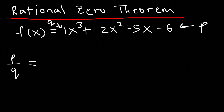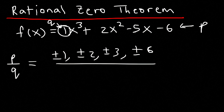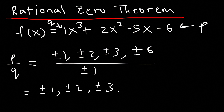Factors of p, or factors of negative 6, include plus or minus 1, plus or minus 2, plus or minus 3, and plus or minus 6. Factors of the leading coefficient 1 is just plus or minus 1, and any number divided by 1 is itself. So the possible rational zeros are ±1, ±2, ±3, and ±6.